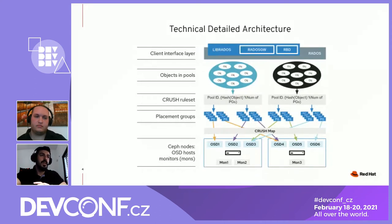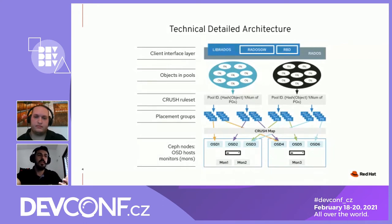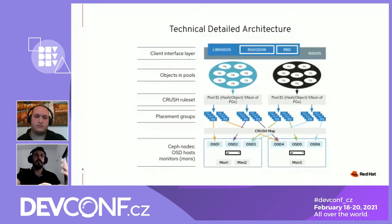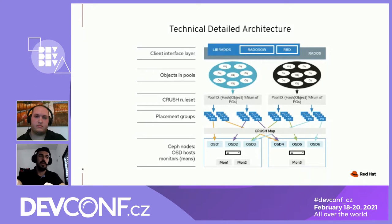One important thing to mention is the crush map. The crush map holds the cluster state and topology. When one of Ceph's components fails — whether it's a disk, a server, a rack, or even a data center — the crush map is automatically notified, so Ceph knows how to replicate the data to another location to maintain the wanted recovery.